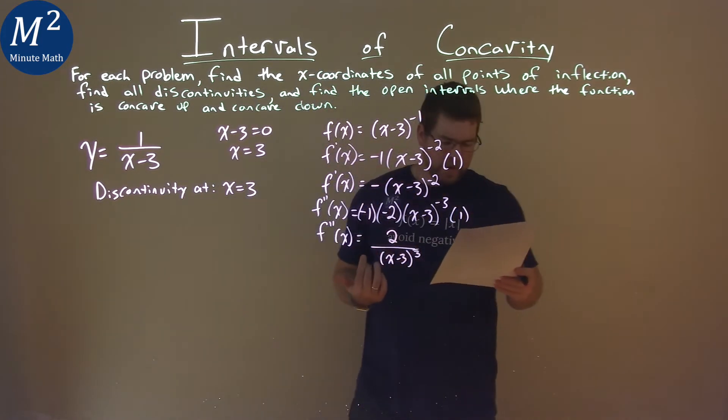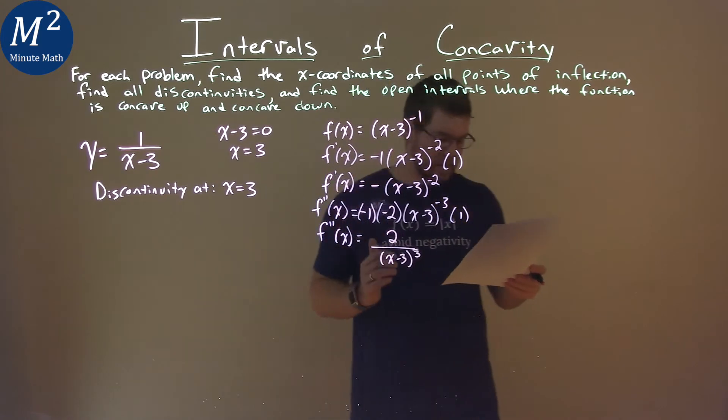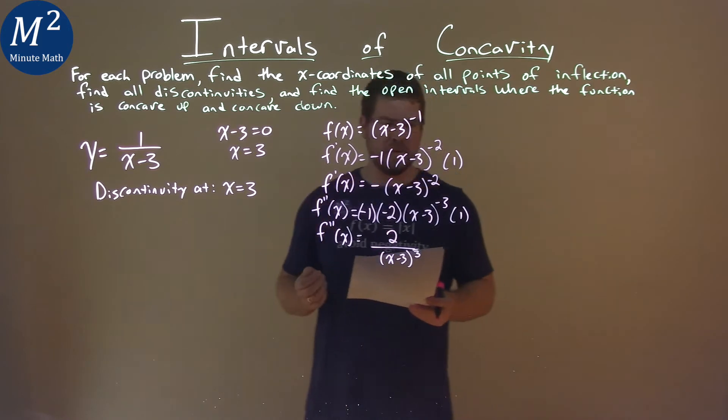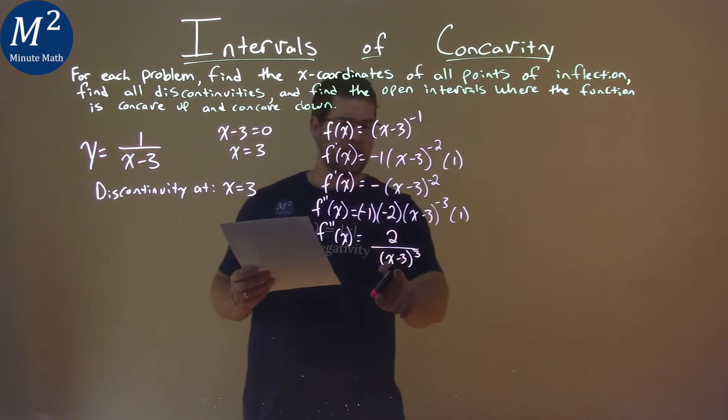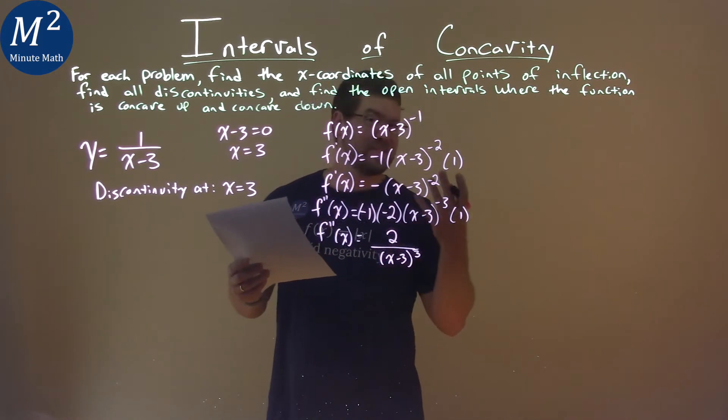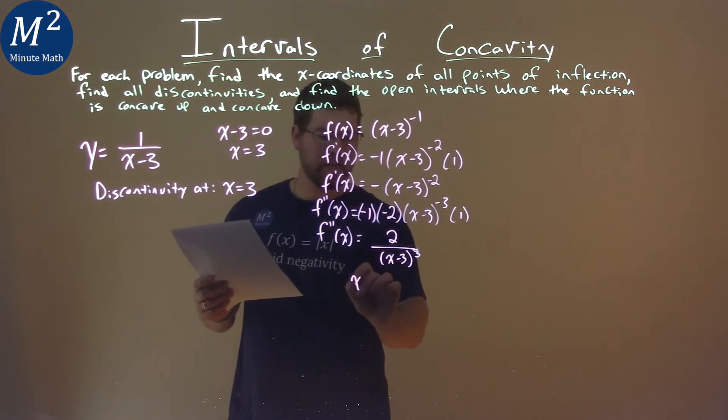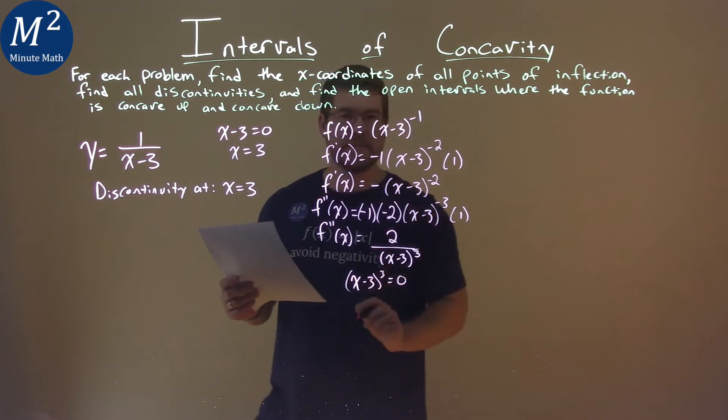Okay, so now we have our second derivative. We need to find our points of inflection, a critical point here. And that's going to happen when the denominator is equal to zero. That's something critical that's happening. So we take our x minus 3 to the 3rd power and set it equal to zero.